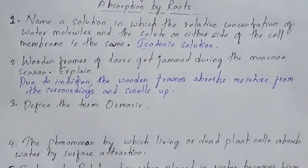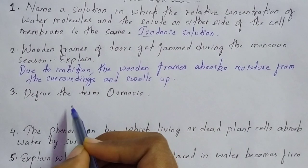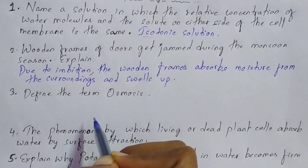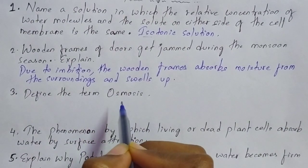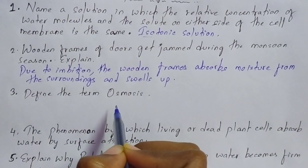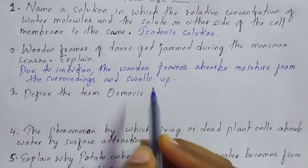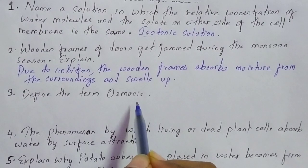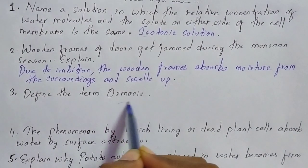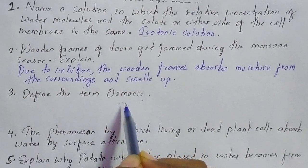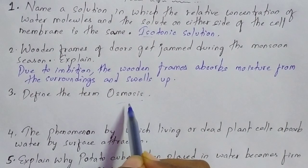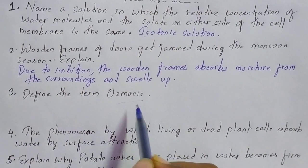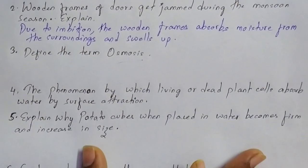Moving on to question number three, which is to define the term osmosis. Osmosis is defined as the process of movement of water from a region of higher concentration to a region of lower concentration. The difference between osmosis and diffusion is that osmosis involves the movement of water molecules specifically, whereas diffusion is the movement of molecules of any substance from a region of higher concentration to a region of lower concentration.